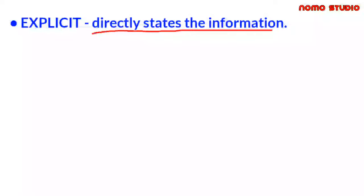We have explicit. It directly states the information, which also means the reader does not have to infer, because the information being delivered is stated using exact words. And explicit is to fully and clearly express something, leaving nothing implied.